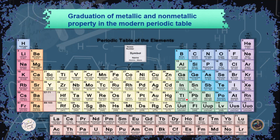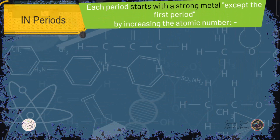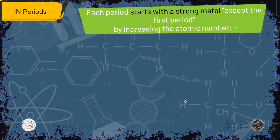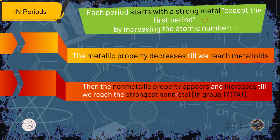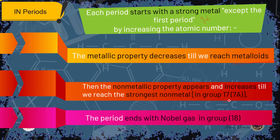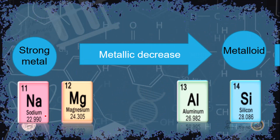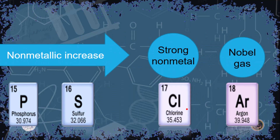What is the graduation of metallic and non-metallic properties across the periodic table? In a period, each period starts with a strong metal — except the first period, which starts with hydrogen. By increasing the atomic number, the metallic property decreases until we reach the metalloids. Then non-metallic properties start to appear and increase until we reach the strongest non-metal in group 17 (7A). Each period ends with a noble gas in group 18.